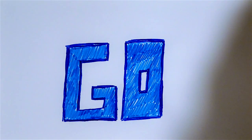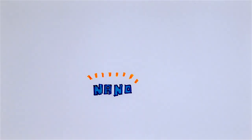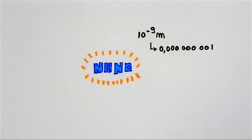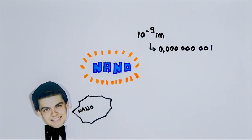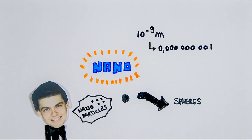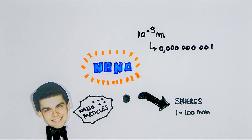But how can we solve this? Well, let's go nano. Nano is everything with a size of 10 to the minus 9 meter, which is one million times smaller than the width of a human hair. And I want to make nanoparticles, which are tiny spheres with a size between 1 and 100 nanometer.